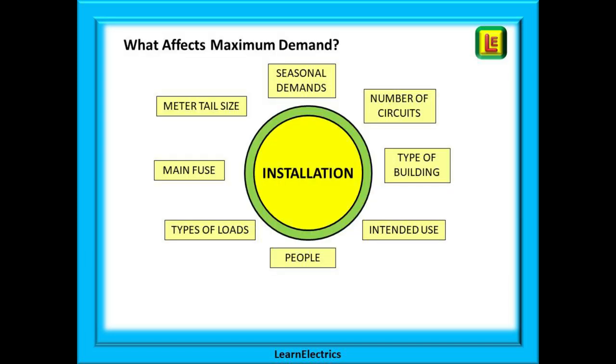Consider what factors affect the maximum demand in an installation. What about seasonal demands? A dwelling would use different appliances in winter when it was minus 10 degrees outside compared to summer when it was plus 30 degrees. The number of circuits is a big factor, and the type of building and intended use. People living in the dwelling have their own unique lifestyle and will use electricity in their own unique way. Consider also the main fuse and meter tails. What current are they actually rated to handle, and are we overloading them? This is where diversity is very helpful.